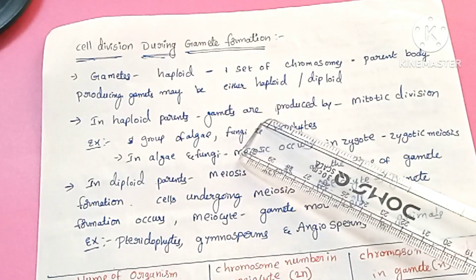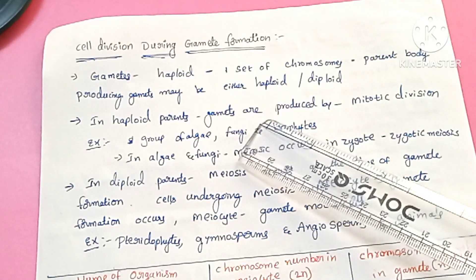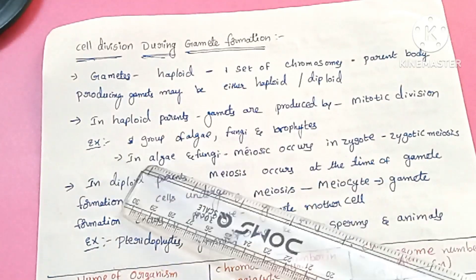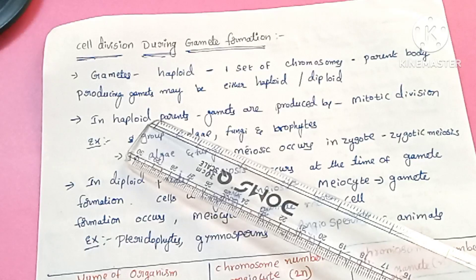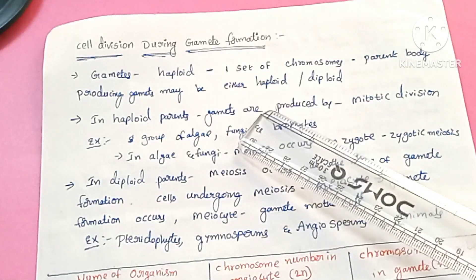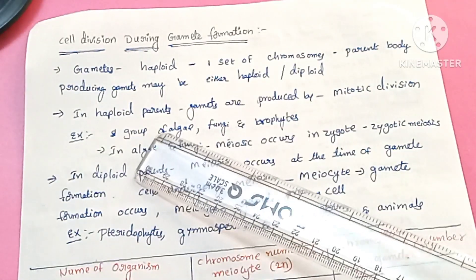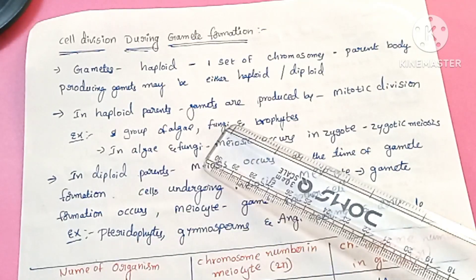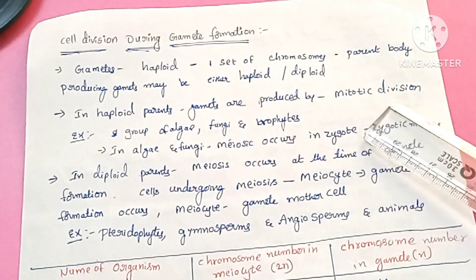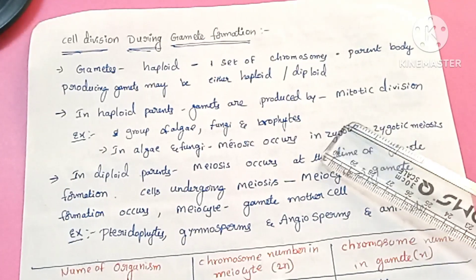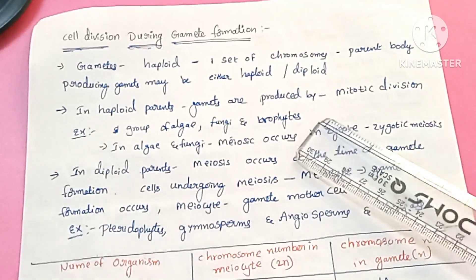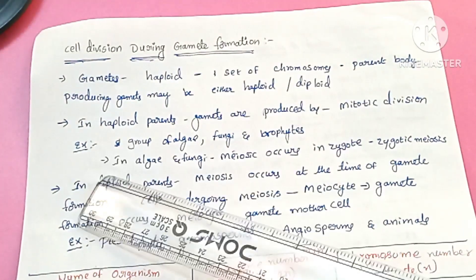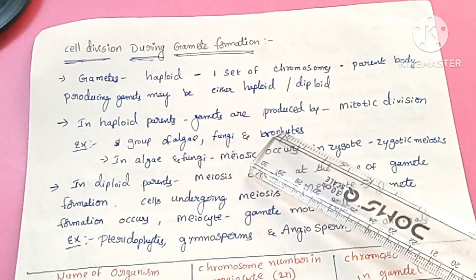When haploid gametes are fused, a zygote is formed. The zygote is in a diploid condition. If the parents are haploid, the gametes are produced by mitotic division. The diploid zygote is then formed. Examples of haploid parents include fungi and bryophytes.